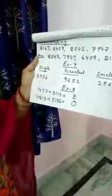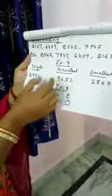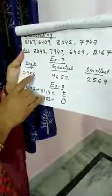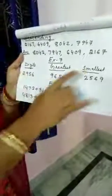Exercise 7 — here are 4 digits: 2, 9, 5, 6. Write the greatest number from these digits and the smallest number from these digits. The greatest will be 9652 and the smallest will be 2569. Can you tell me which is the smallest 4-digit number? Yes — the smallest 4-digit number is 1000, and the largest 4-digit number is 9999.